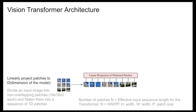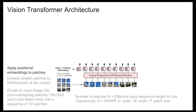The second step is to linearly project our patches to the dimension of the model. This D is a hyperparameter that you can tune. The third step is to apply positional embedding to the patches.